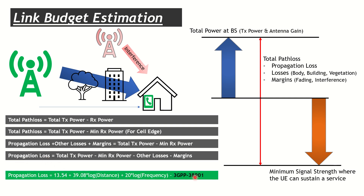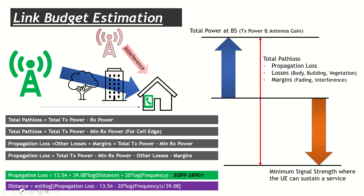From 3GPP 38.901, propagation models are defined: the UMa model for urban and the RMa model for rural. Using the simplified UMa model: propagation loss = 13.54 + 39.08 × log(distance in meters) + 20 × log(frequency in GHz). Rearranging for distance: distance = antilog of [(propagation loss − 13.54 − 20 × log(frequency)) / 39.08]. So once we know the maximum propagation loss for the cell edge and the operating frequency, we can directly calculate the cell edge distance.